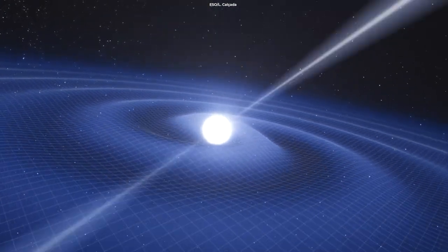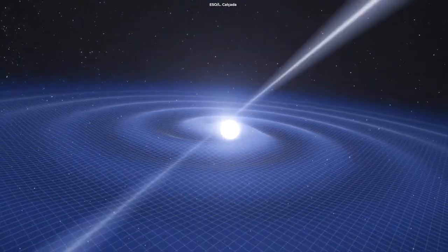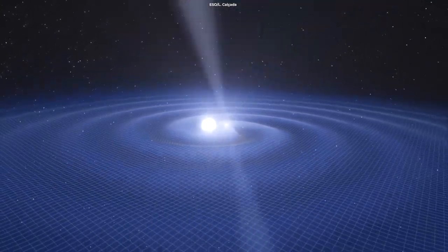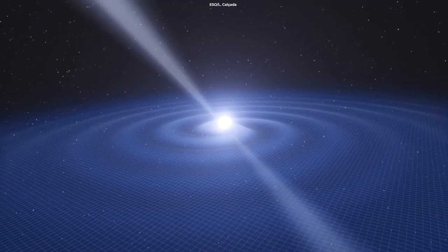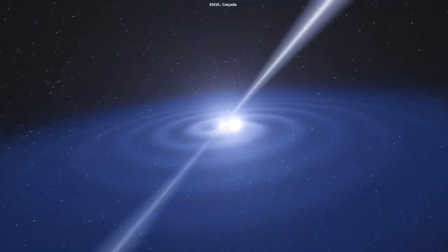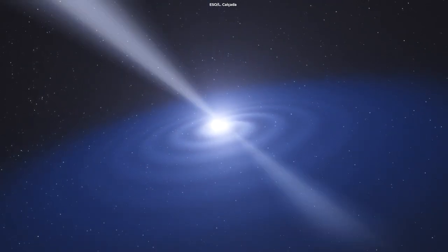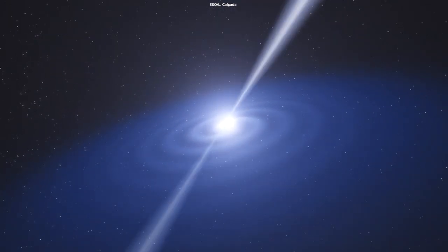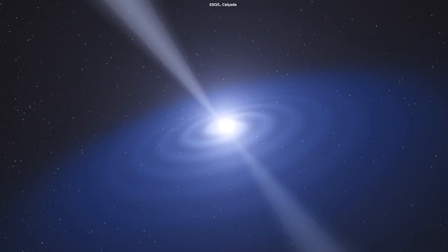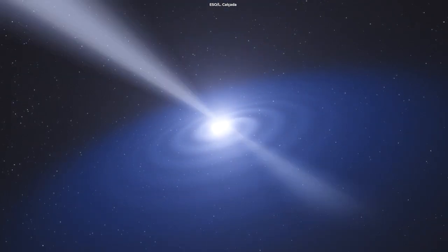So, in simple terms, a binary pulsar is a pulsar orbiting another star. Binary pulsars are one of the very few celestial objects that allow scientists to test general relativity because of the intense gravitational fields in their vicinity.